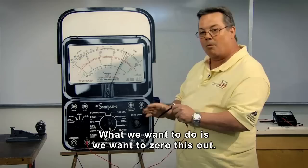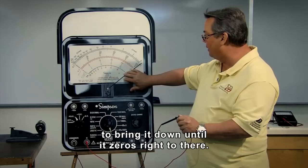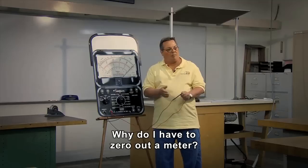Now the needle is going to fluctuate somewhere in here. What we want to do is we want to zero this out. So we have our zero ohm dial here and you want to bring it down until it zeroes right to there. And that way you've zeroed out your meter.